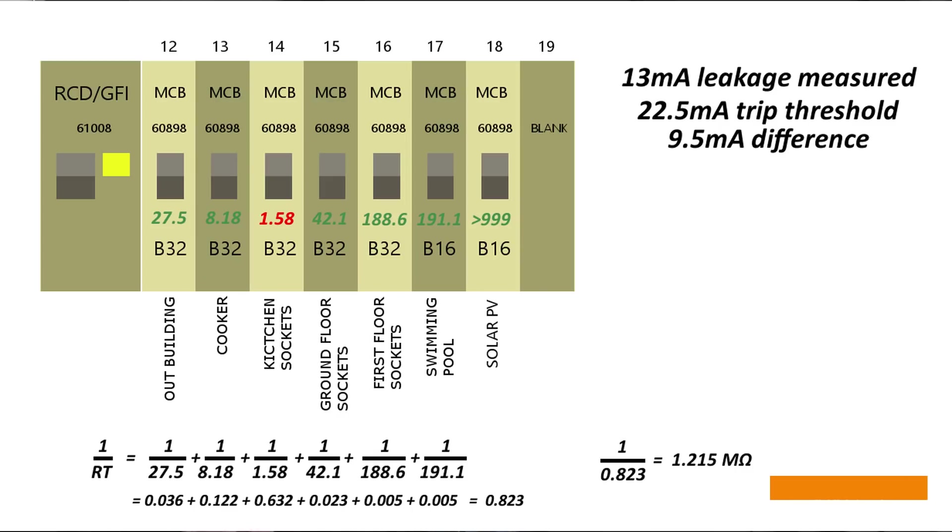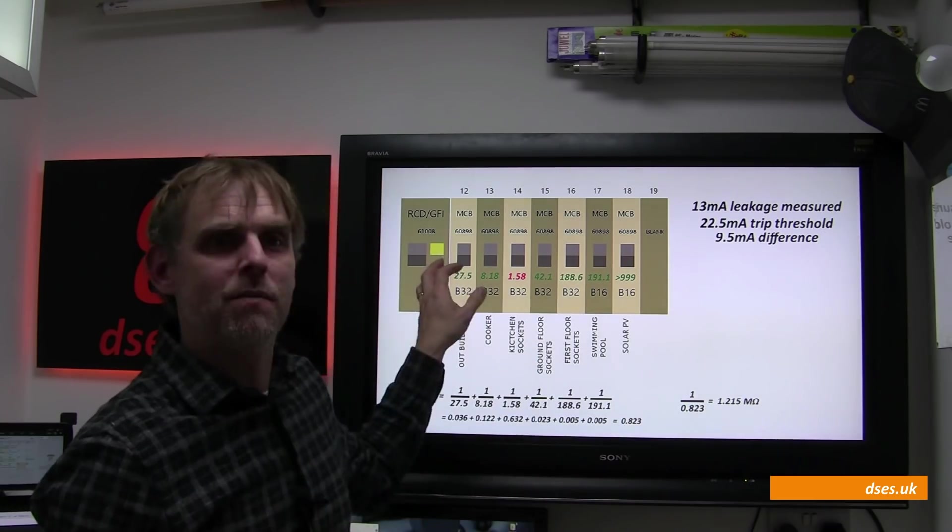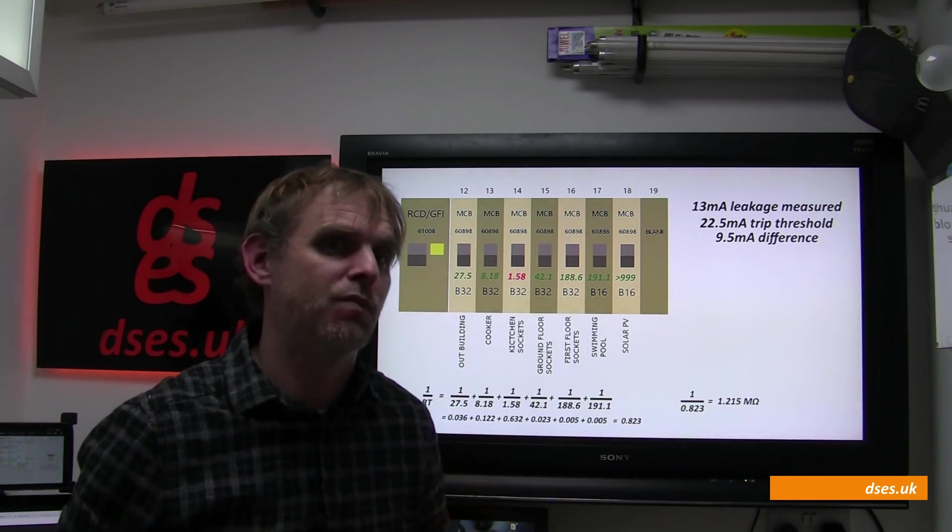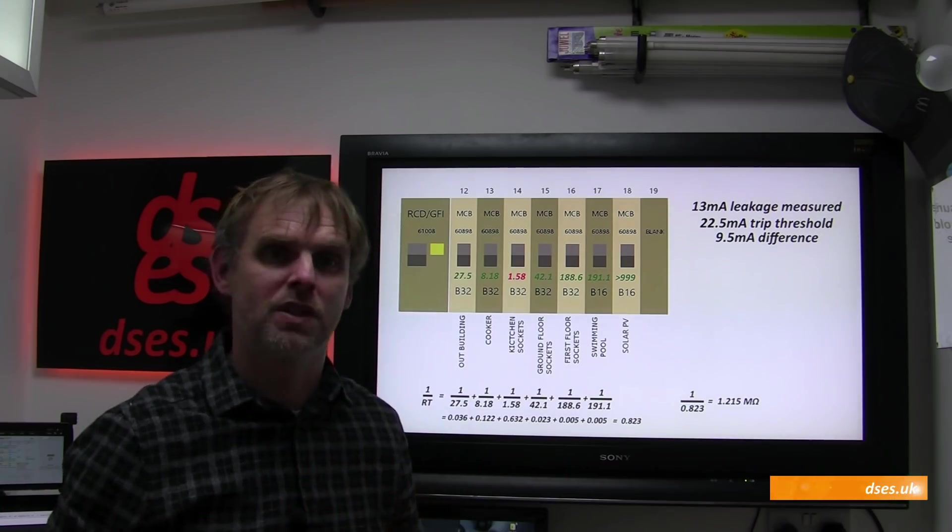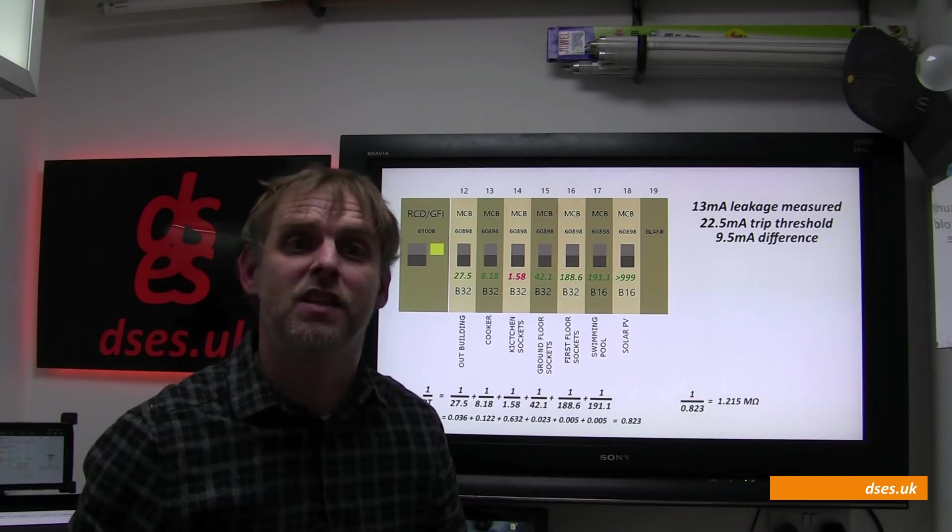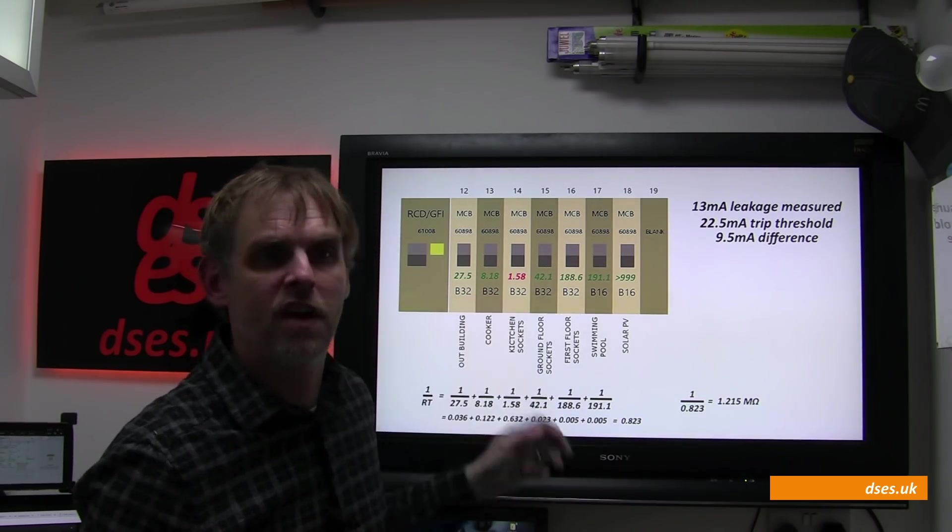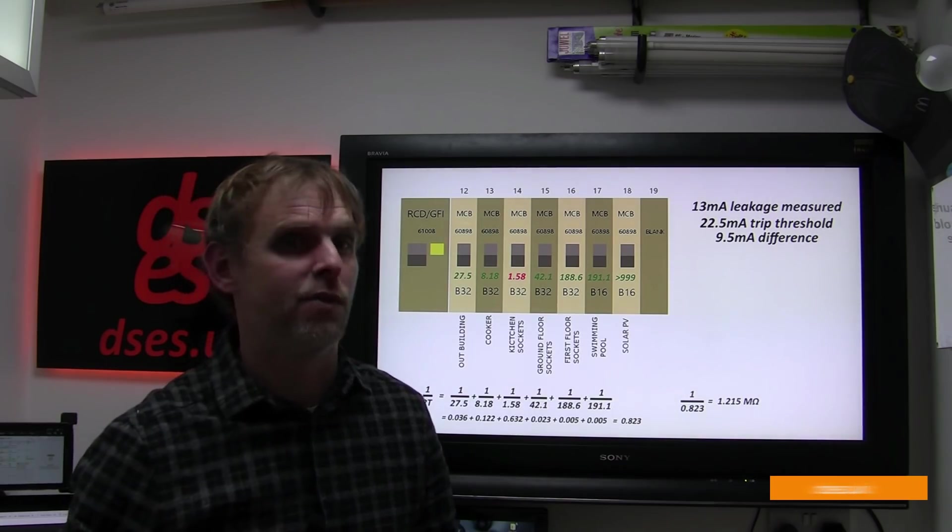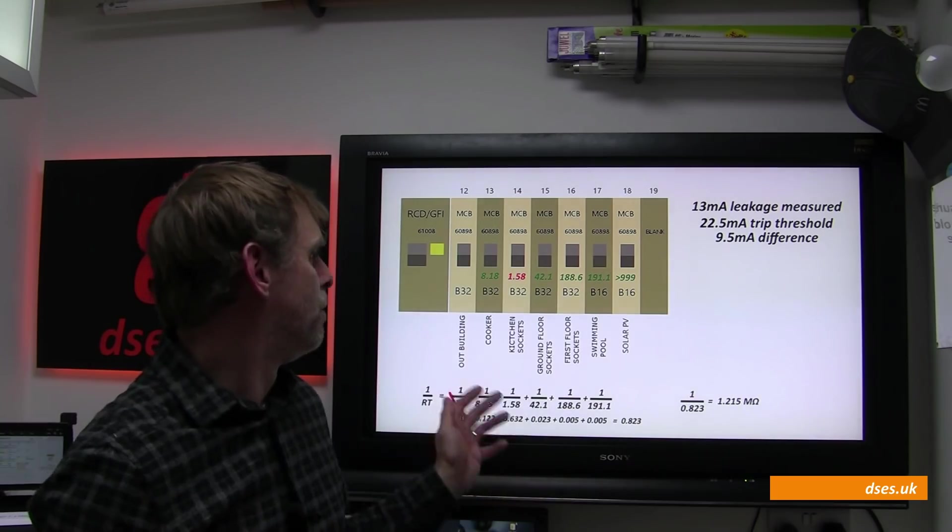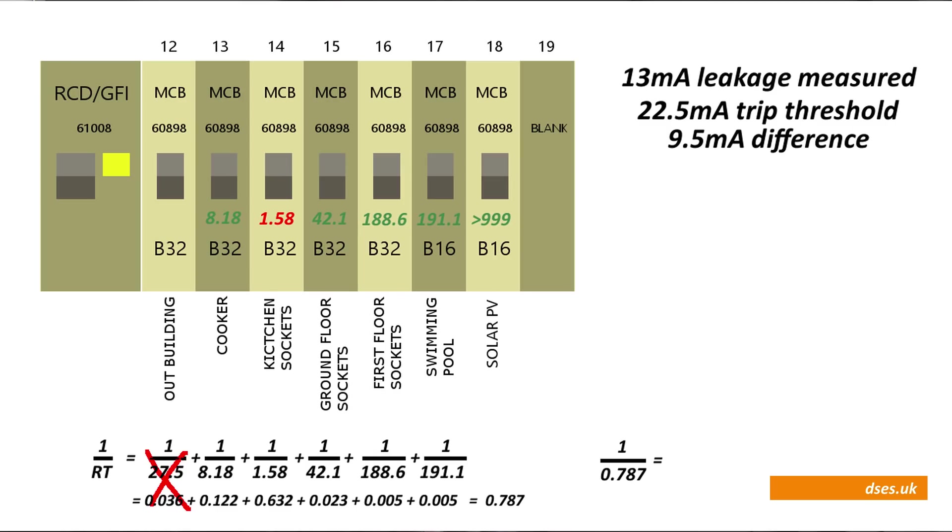So why is it stable with circuit 12, the outbuilding, switched off if that has a relatively high IR? Well turning off this MCB disconnects the line to the outbuilding. The neutral remains connected, but when testing the insulation resistance of that neutral with respect to earth at 250 volts, we get a figure of 212 megaohms. So it's the line wiring or something connected to it that pulls this circuit down to 27.5. And with it flicked off, we go up to 212. The reciprocal of 212 is 0.004, which is so low as to effectively remove this circuit from the calculation, meaning our resultant number drops to 0.787, whose reciprocal is 1.27 megaohms.